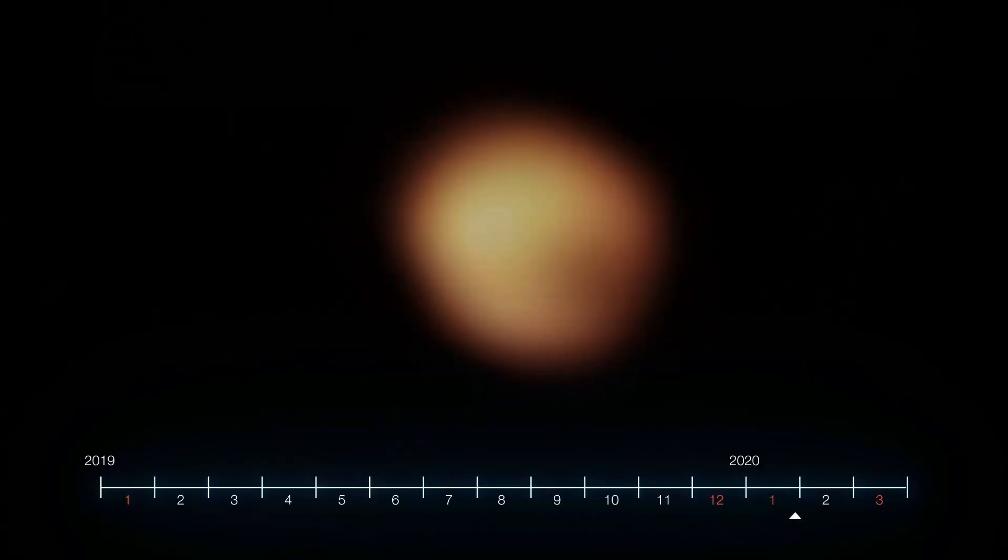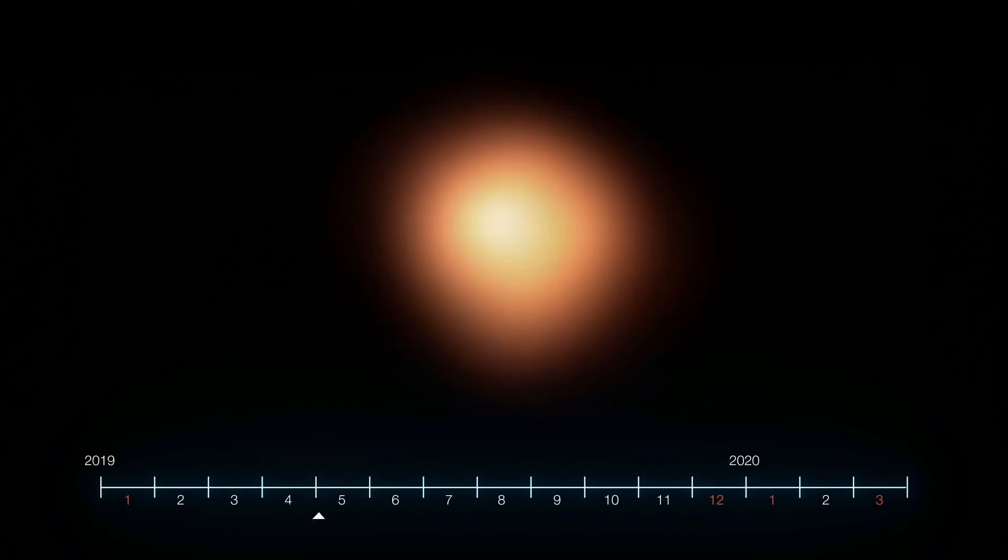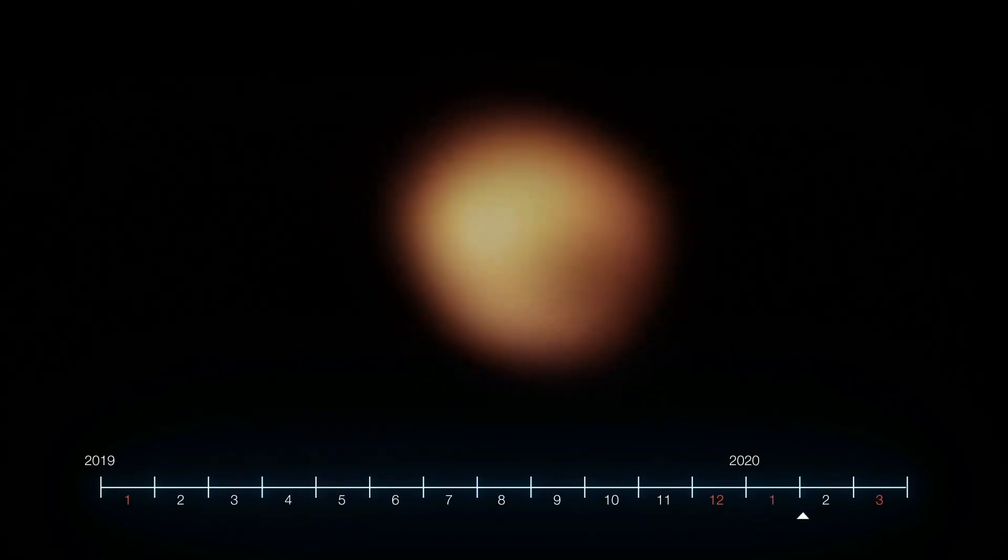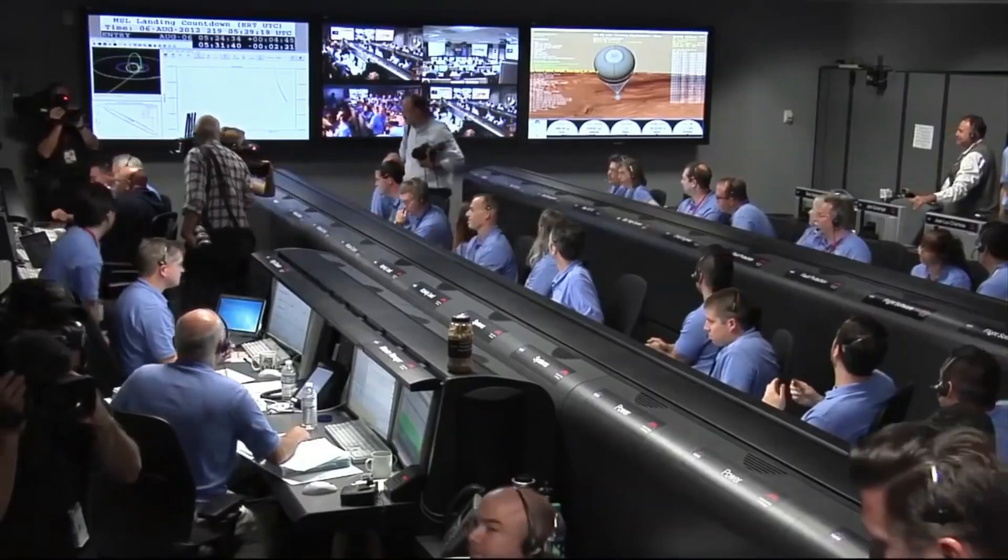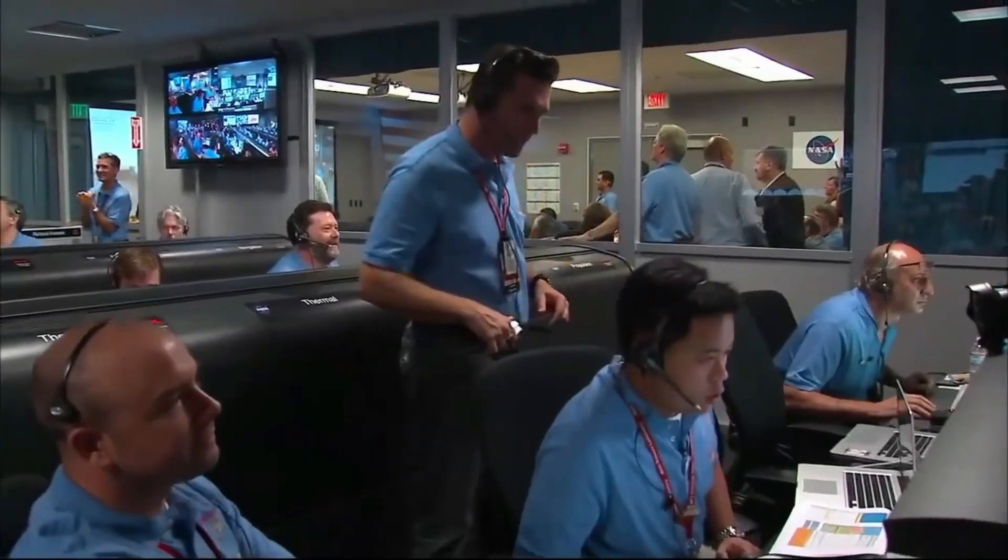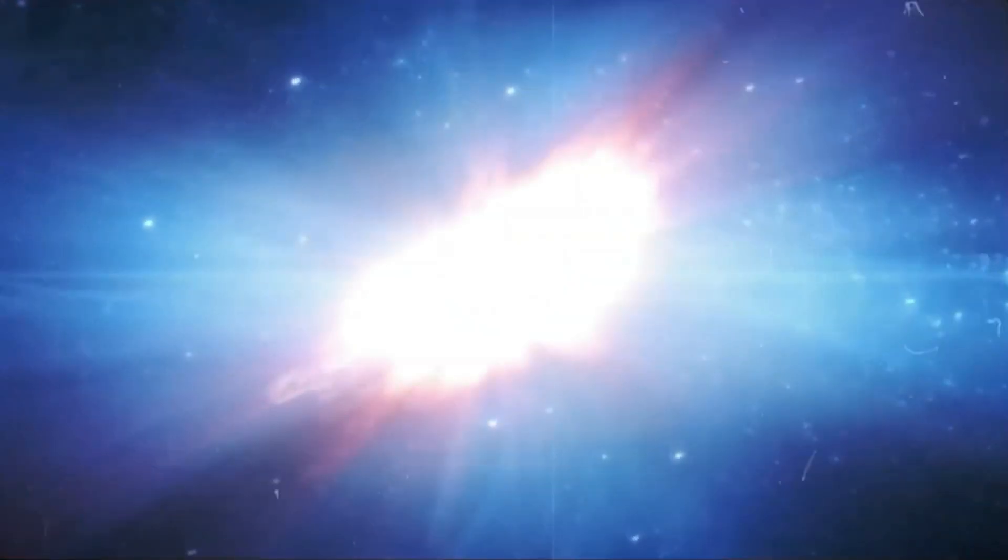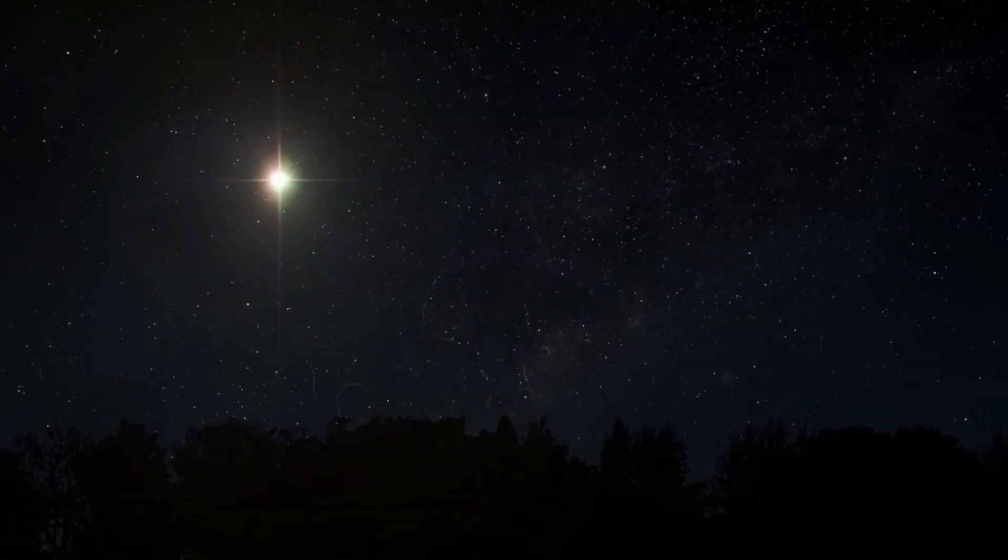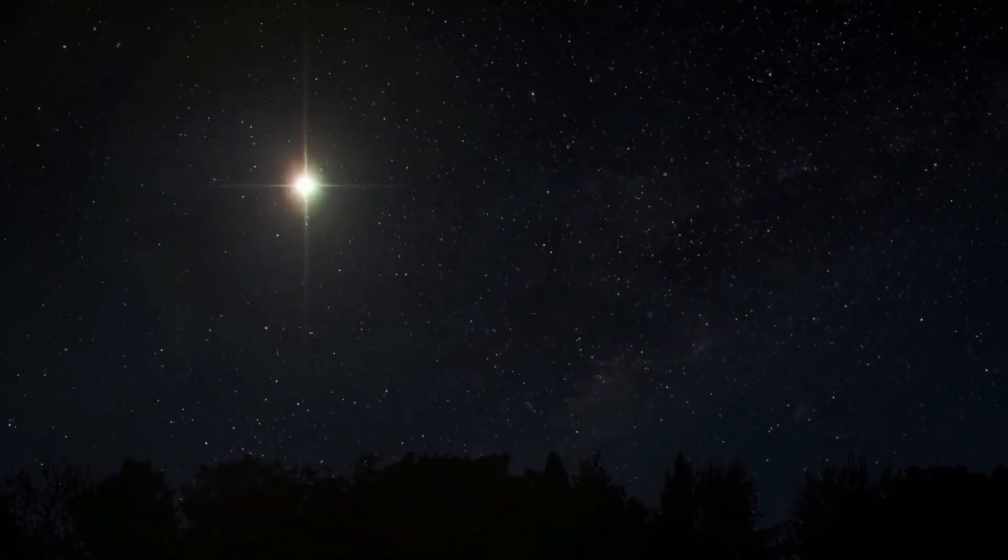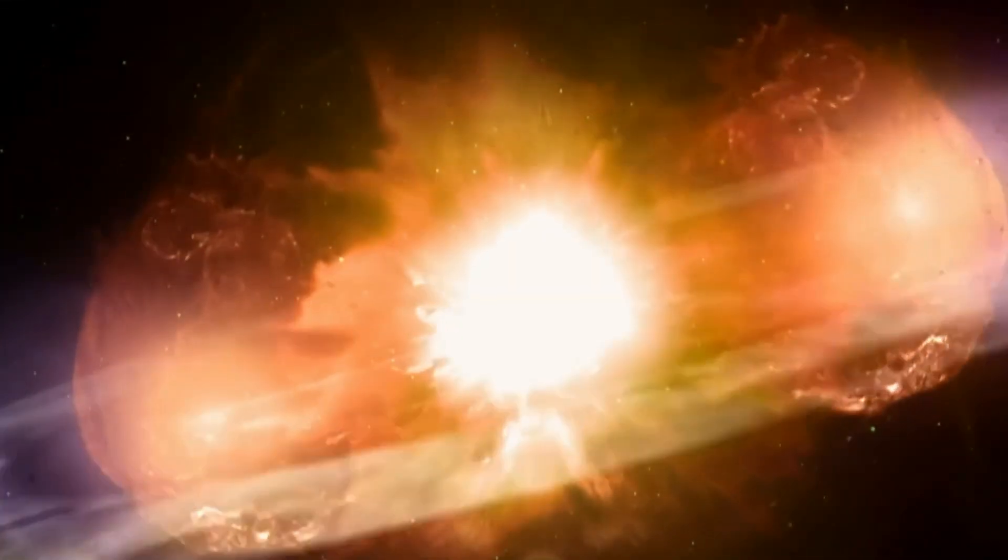Predicting the supernova's exact timing is nearly impossible, and the unpredictability of the star's behavior has pushed scientists to develop new technologies to monitor it. The challenge of observing Betelgeuse from Earth is further compounded by its immense distance, around 640 light-years away, making it difficult to study with the precision that astronomers would like.